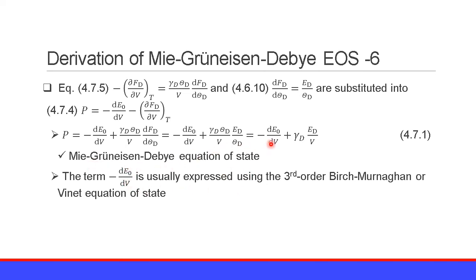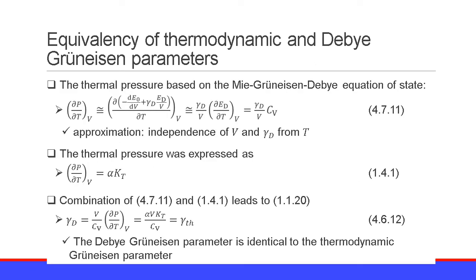The term minus dE0/dV is usually expressed using the third-order Birch-Murnaghan equation of state or Vinet equation of state. In the Mie-Grüneisen Debye equation of state, we have a new parameter: the Debye Grüneisen parameter. Let me prove that the thermodynamic Grüneisen parameter and Debye Grüneisen parameter are equal. Let us consider the thermal pressure based on the Mie-Grüneisen Debye equation of state.